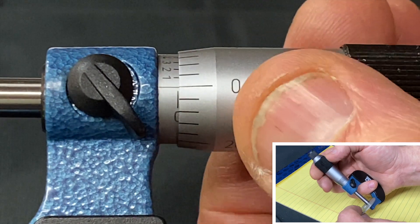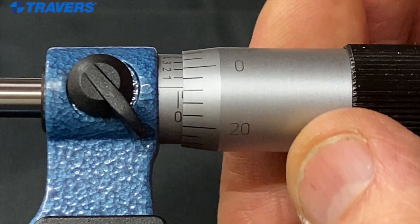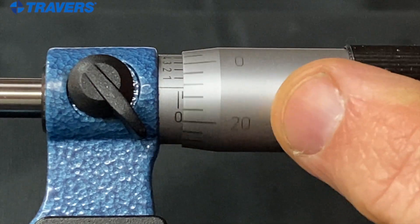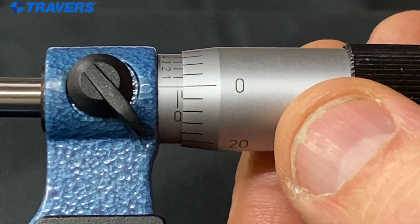I'm going to make one full revolution which is 25 thousandths. You see the 20 here, there's the zero, that's 25.